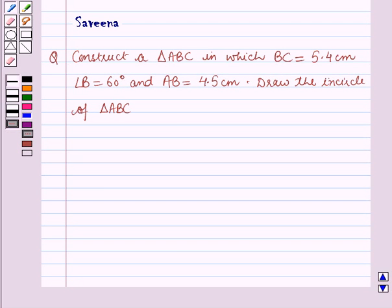Hello all and welcome to the session. Today the question is construct a triangle ABC in which BC is equal to 5.4 cm, angle B is equal to 60 degrees and AB is equal to 4.5 cm. Draw the incircle of triangle ABC.